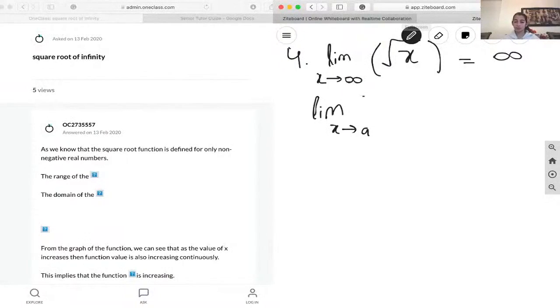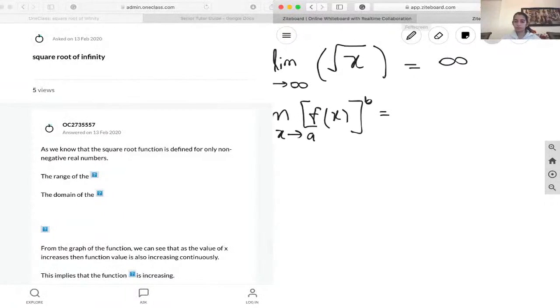Of a function to the power of b, because that initial is one over two, is equal to the limit of x as it approaches a of x to power b.